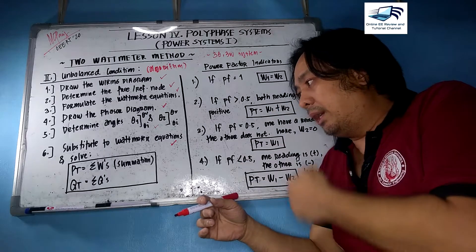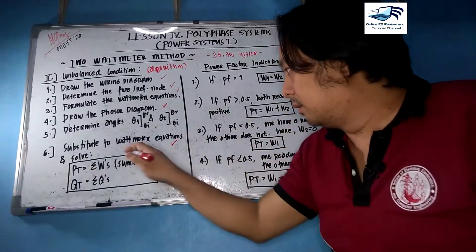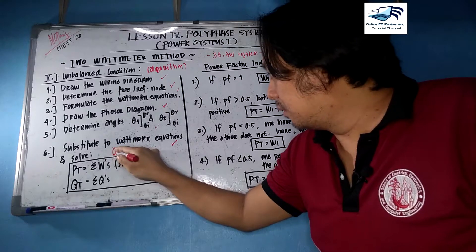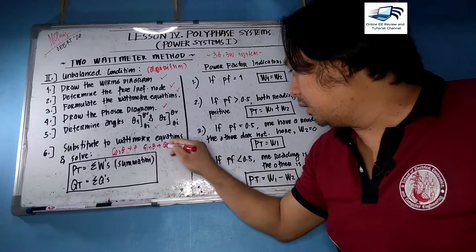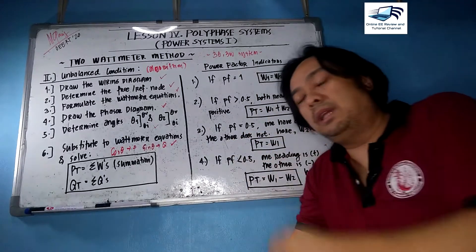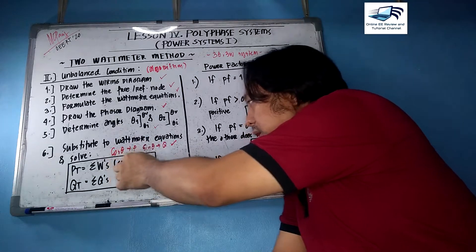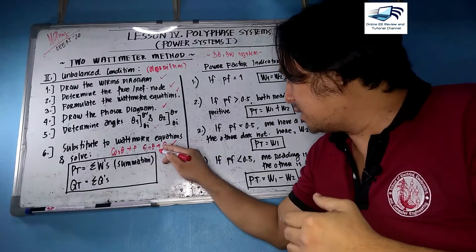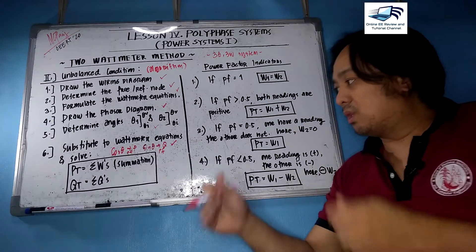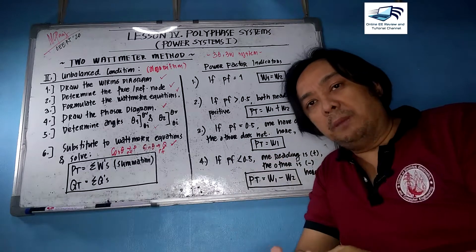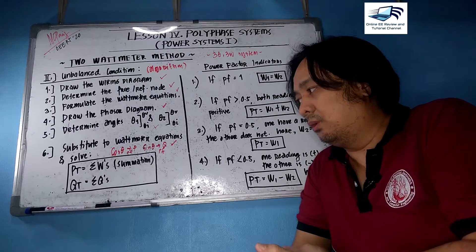After substituting into the wattmeter equations, solve for total real power PT and total reactive power QT. The key distinction: cosine(theta) gives you real power P (power factor), sine(theta) gives reactive power Q (reactive factor), and tangent(theta) gives the quality factor. These factors were already covered in the AC circuits video.